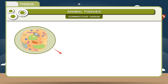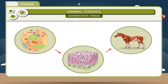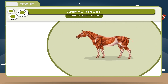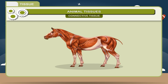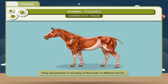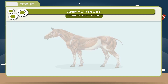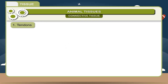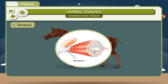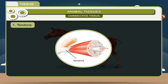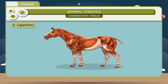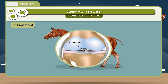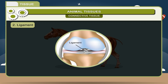Connective tissue: The cells of this type of tissue are composed of different materials. The various organs of the body are connected with one another by connective tissues. They are present in all parts of the body in different forms. 1. Tendons: A band of tough fibrous tissue that attaches a muscle to a bone is called a tendon. 2. Ligament: A band of tough fibrous tissue that connects bones and cartilage at a joint or supports an organ, muscle, or other body part is called a ligament.